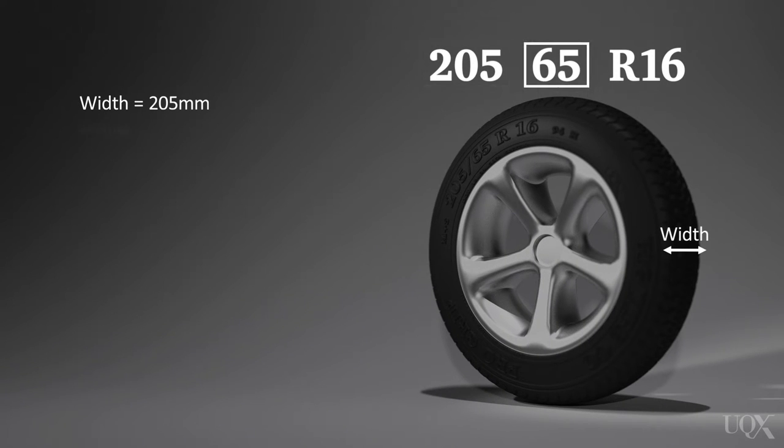The second number is the profile. It is the ratio of width to height. In this case, 65%. Therefore, tyre height h equals 65 divided by 100 times the width w.